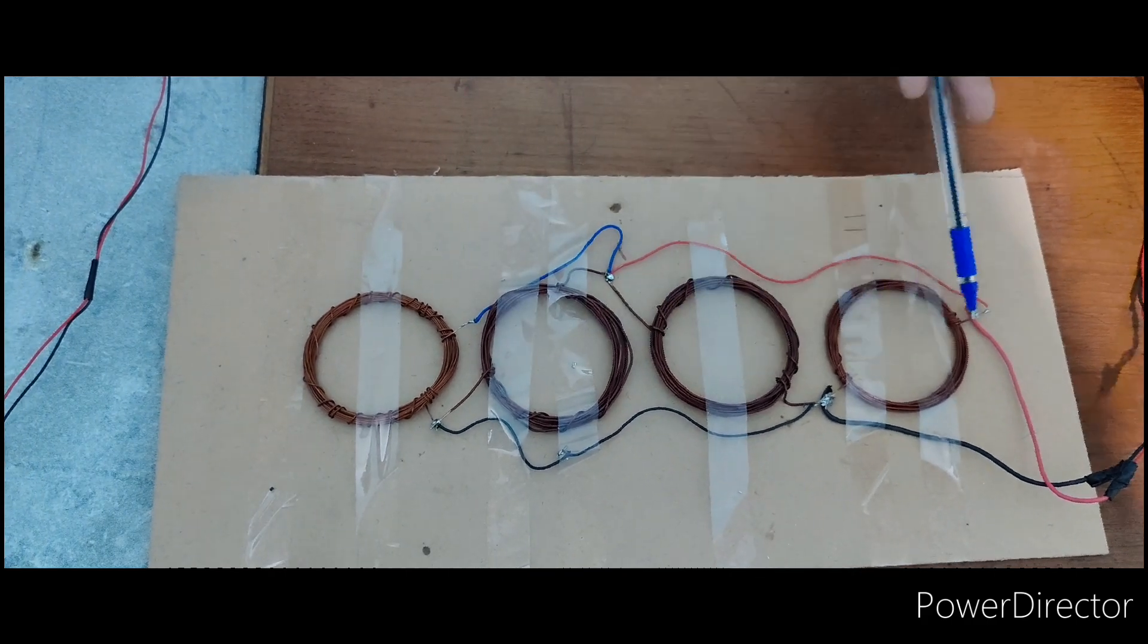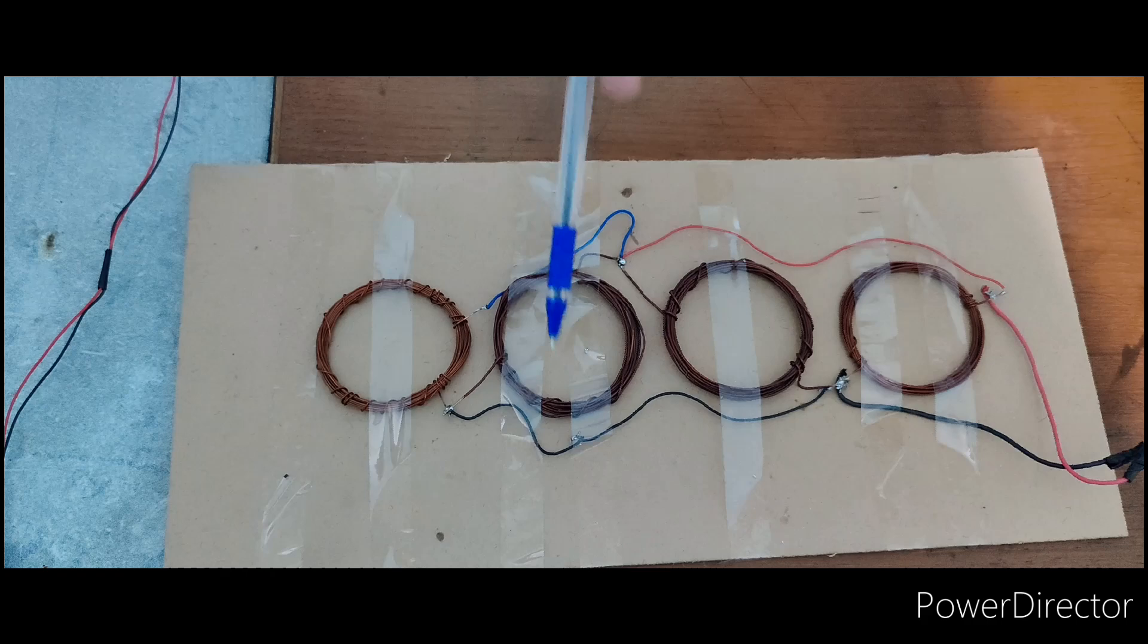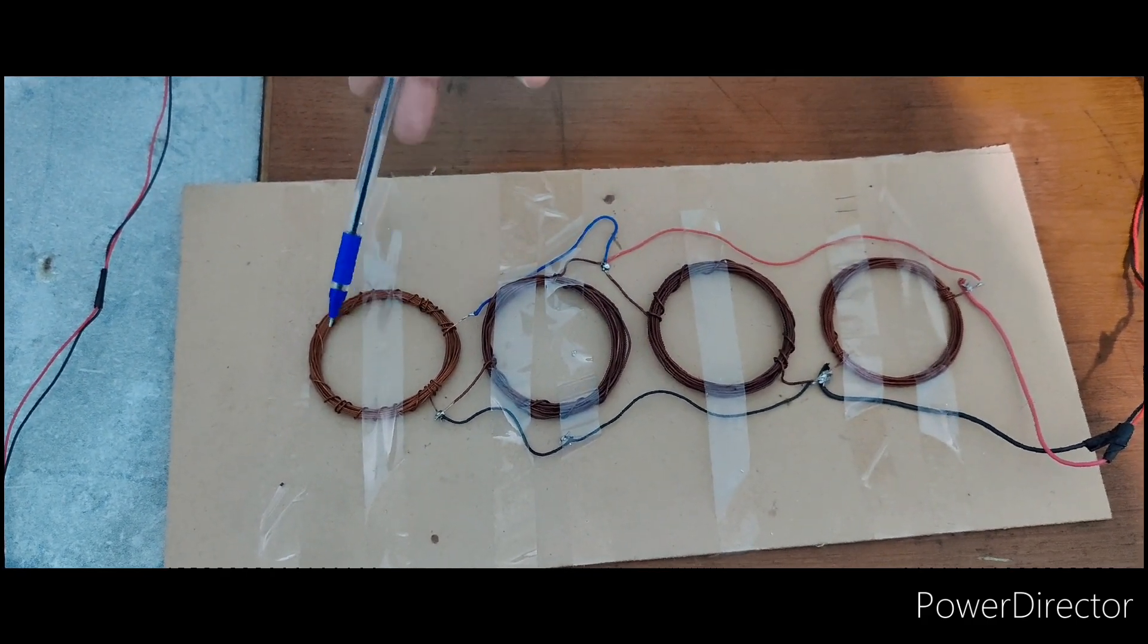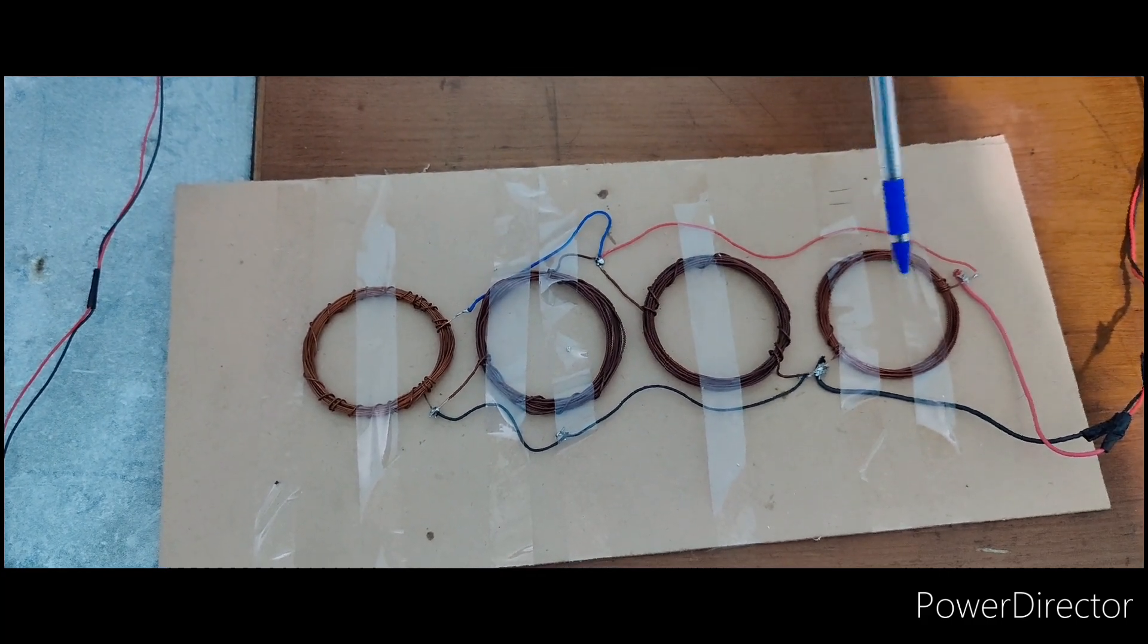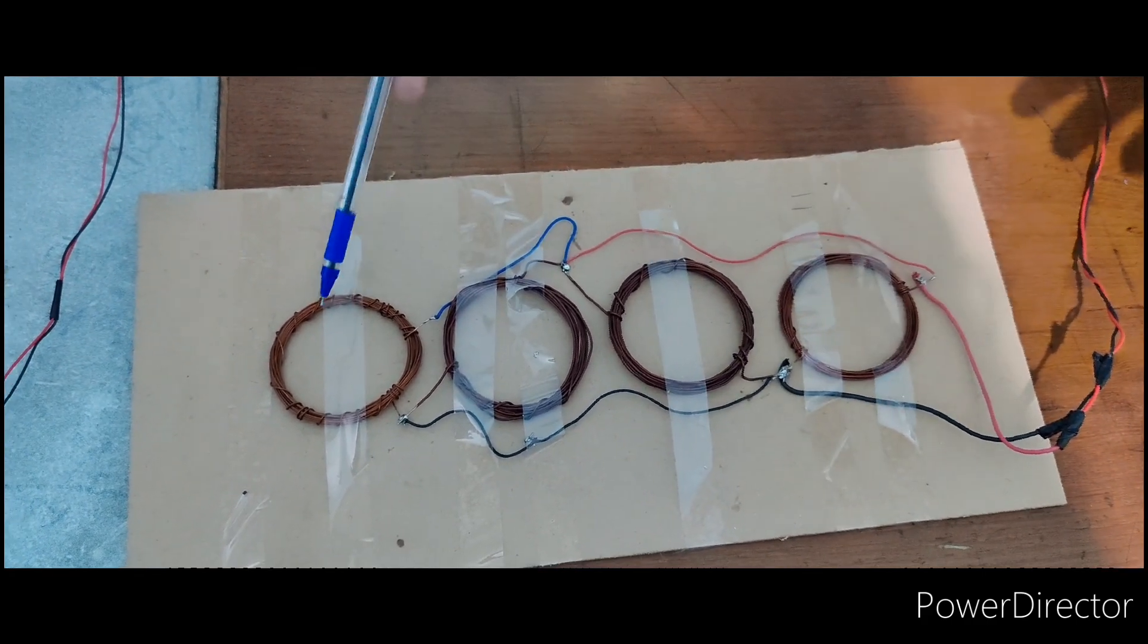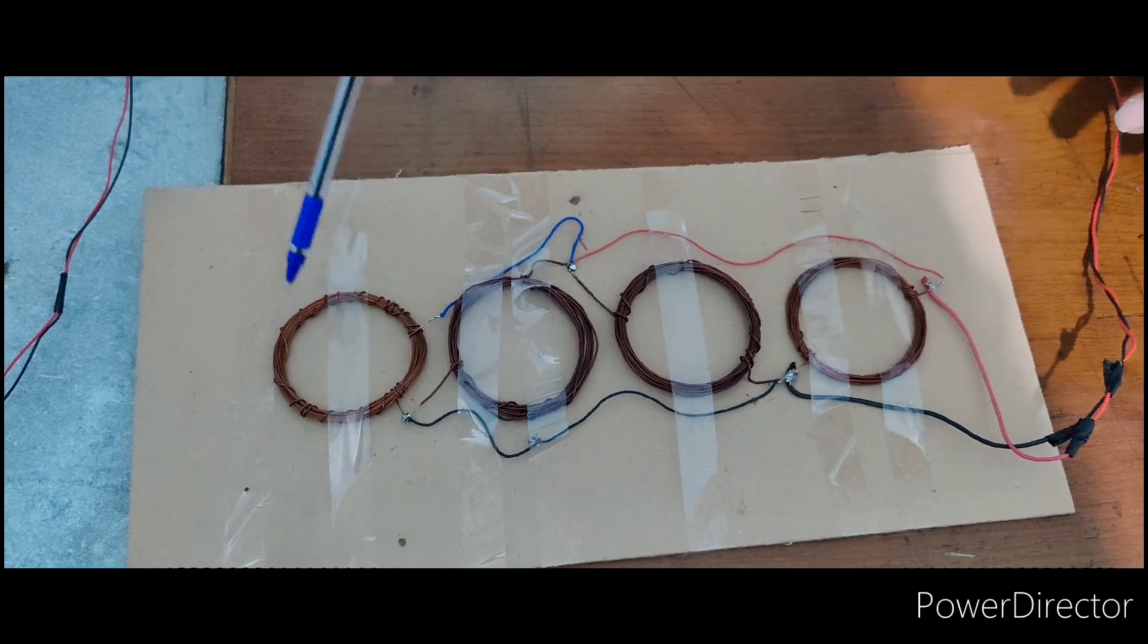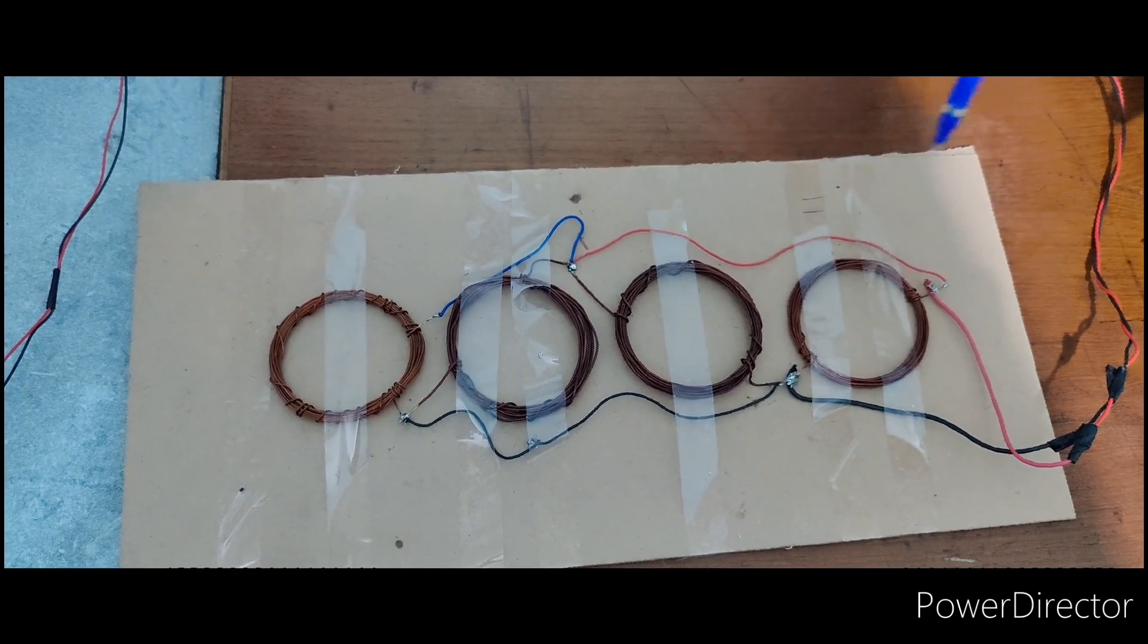When the vehicle moves across this, energy will be induced in these coils. Very low energy will be maintained in the other coils. When it moves here, the energy will be increased and here energy will start to reduce because there is no load across this. So for that purpose we are using parallel connection.